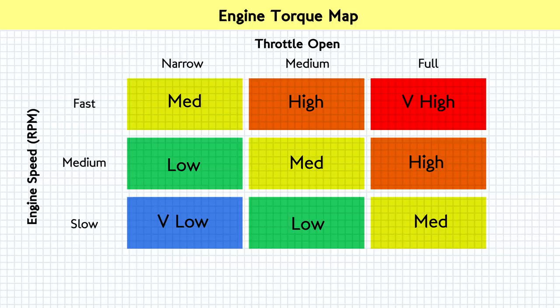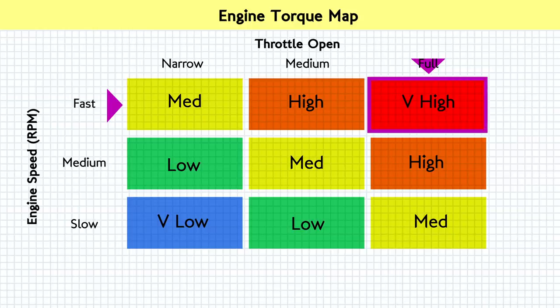Our outputs. So if the engine is running at low RPM and we're only squeezing the throttle a little, the map tells us the engine will be producing a small amount of torque. Full throttle at high RPM produces a large amount of torque. And so on. We just draw from the two inputs to find our output torque. You get the idea.